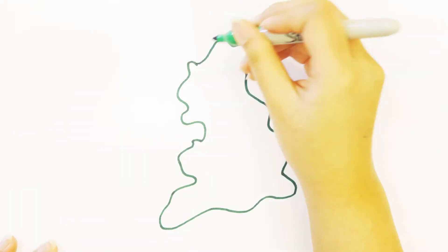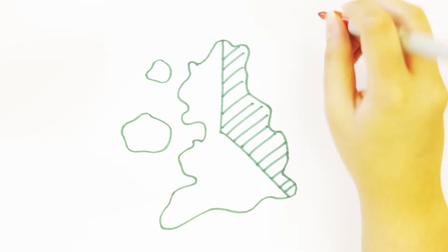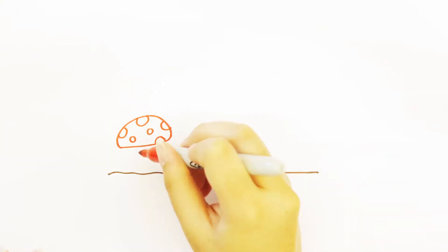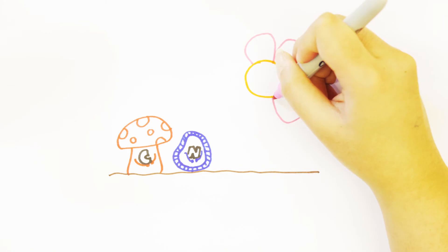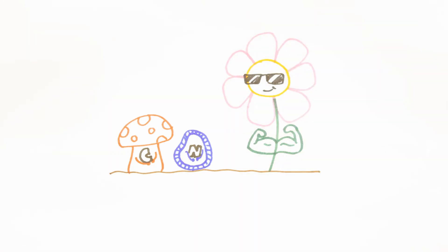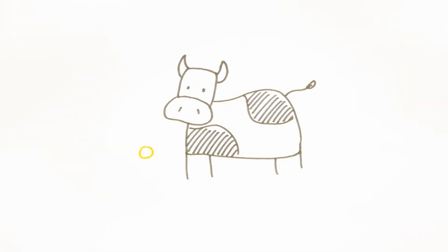In the UK, grasslands cover around one-third of land surface and are a major carbon store, holding around 30% of the UK total soil carbon. Soil is a mixture of mineral and organic material and contains large amounts of carbon and nitrogen. Carbon and nitrogen can be fixed by bacteria and fungi living in the soil, taken up by plants for growth, or released as the greenhouse gases carbon dioxide, methane, and nitrous oxide.